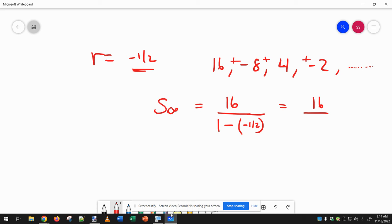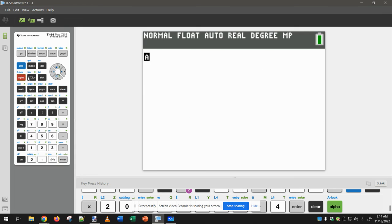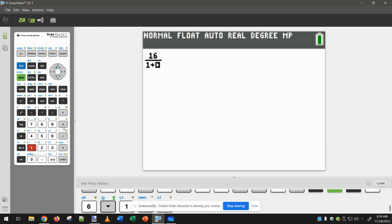So we just have to do 16, and then 1 plus one half. And I can do this on my calculator pretty easily. 16, 1 plus one half, or you can type in 0.5.